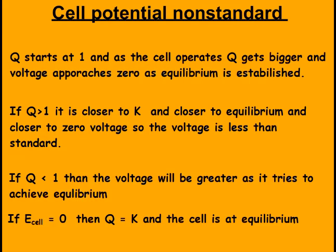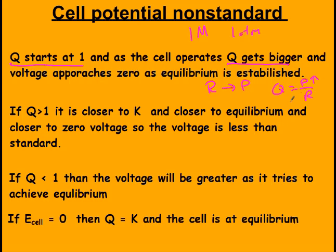When a reaction is not at standard conditions — standard is 1 molarity or 1 atm — Q will be one at standard conditions. As the cell operates, Q gets bigger and voltage approaches zero as equilibrium is established. If Q is greater than 1, the cell is closer to equilibrium and voltage is less than standard. If Q is less than 1, the voltage will be greater as the system is further from equilibrium. If E cell is zero, Q equals K and the cell is already at equilibrium.